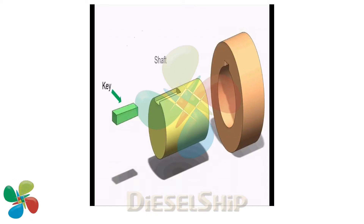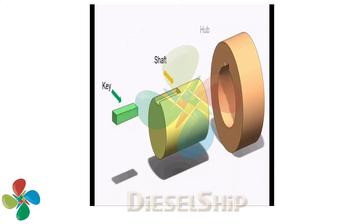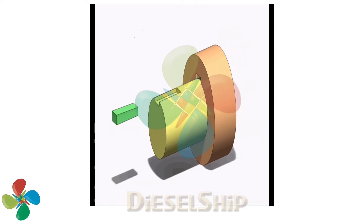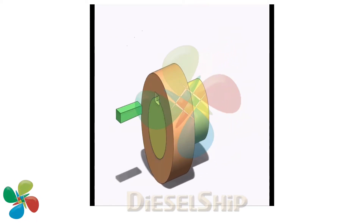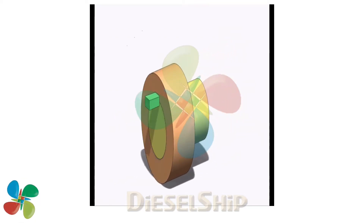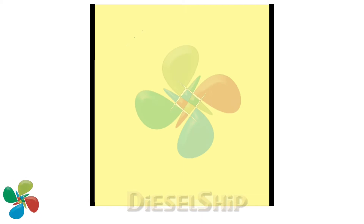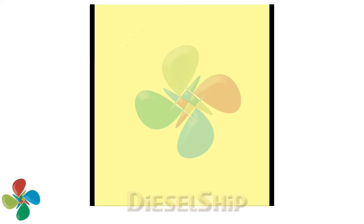As you can see in the animation, this is the key, this is the propeller shaft, and this is the propeller hub. The propeller hub is connected and then the key is inserted. As the shaft turns, it transmits the power into the propeller.